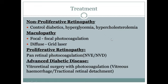Treatment: for non-proliferative retinopathy, control diabetes, hyperglycemia, and hypercholesterolemia. For focal maculopathy use focal photocoagulation; for diffuse maculopathy use grid laser. For proliferative retinopathy use pan-retinal photocoagulation. For advanced diabetic disease — when posterior vitreous humor begins detaching from retina — vitreoretinal surgery is needed along with photocoagulation to stop new vessel formation.